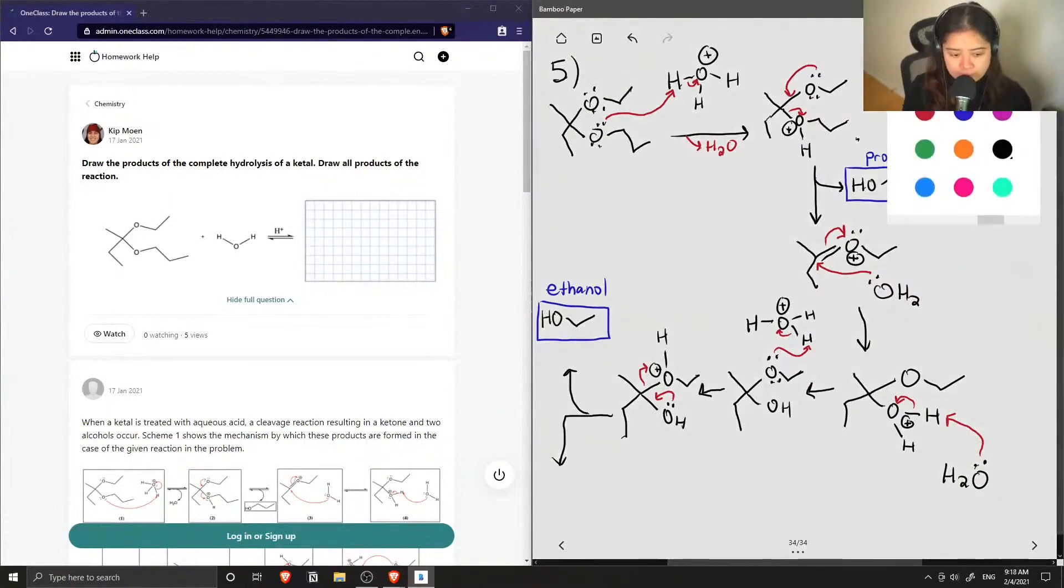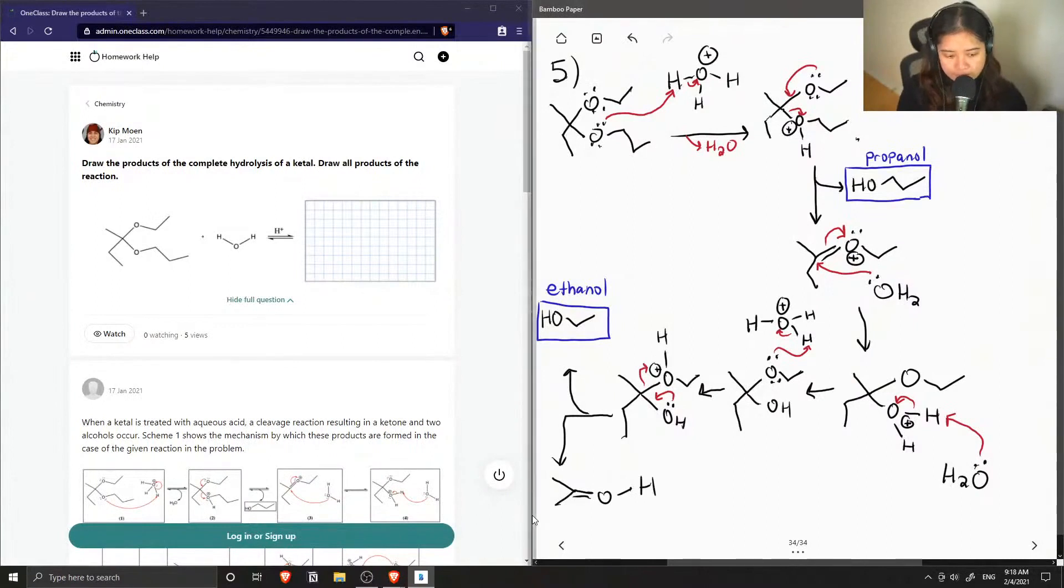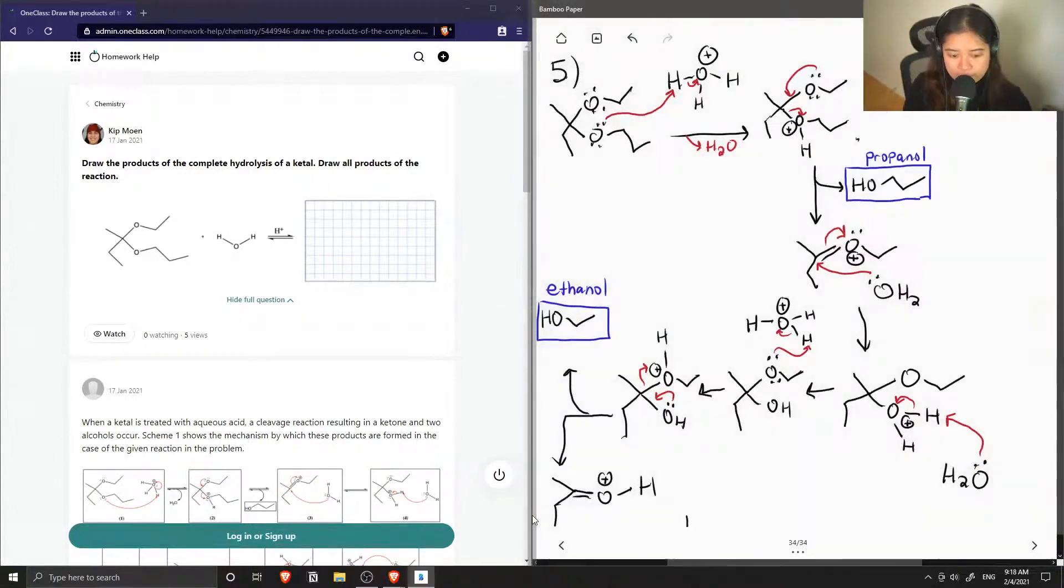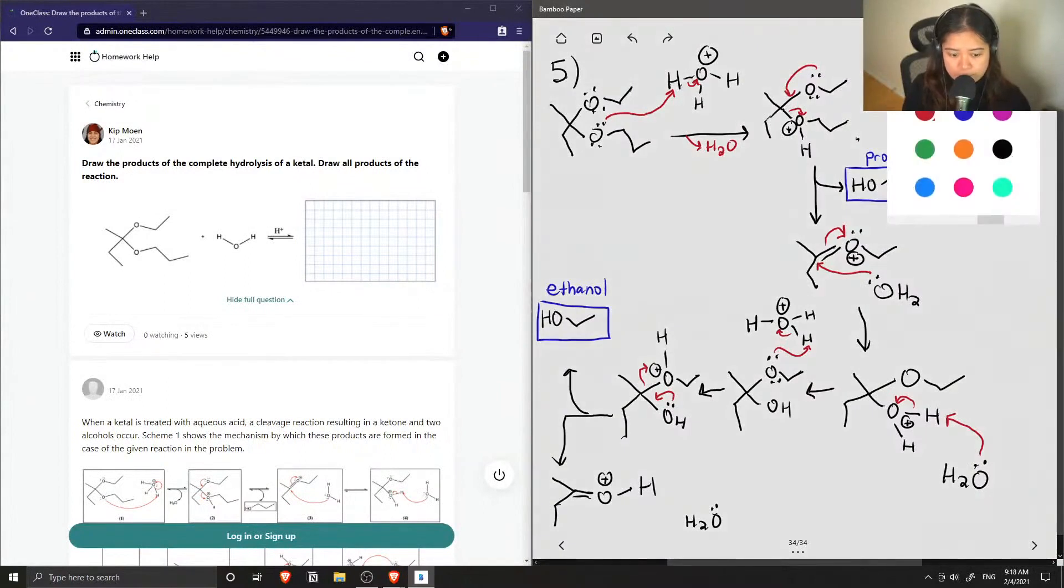And our other final group will now have a double-bonded oxygen that is protonated, and this has a positive charge. And now water can come in to deprotonate it, bringing this down. And we're left with our final product, which is this ketone group.